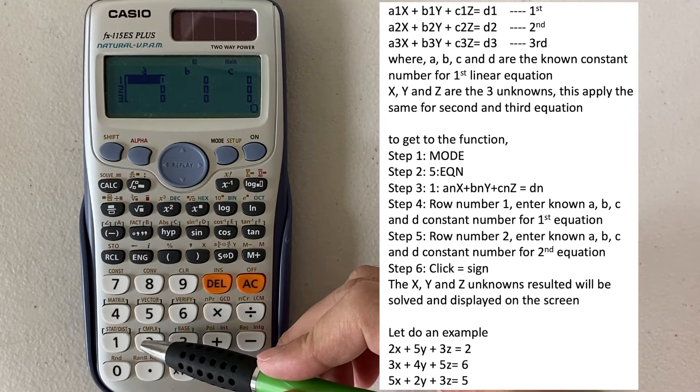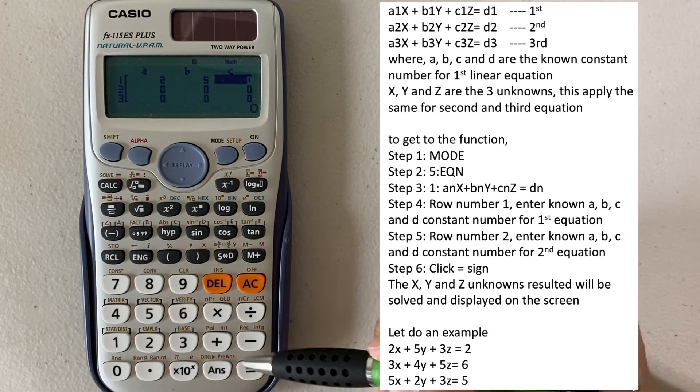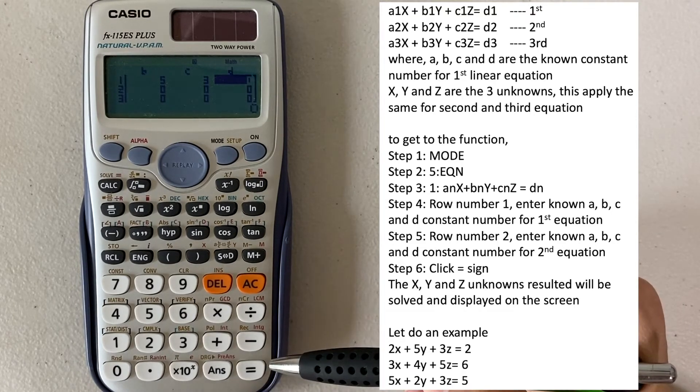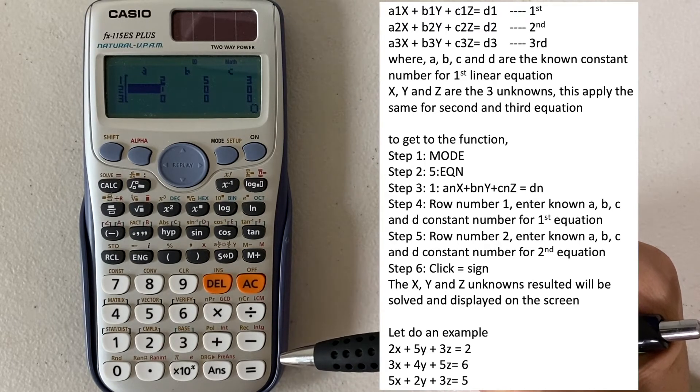So for the first equation, we put A as 2, and then 5 as B, and then C as 3, and then D is 2. And we go on to the second equation,